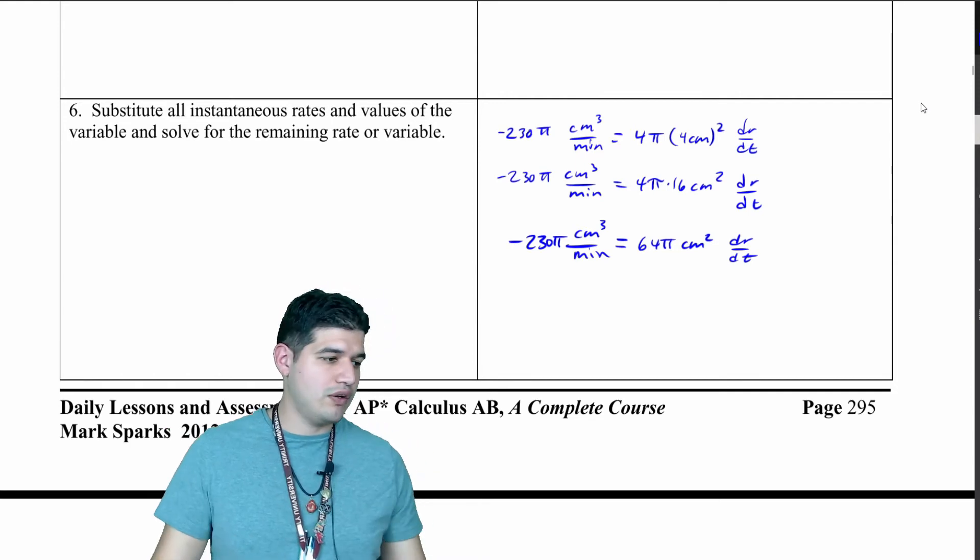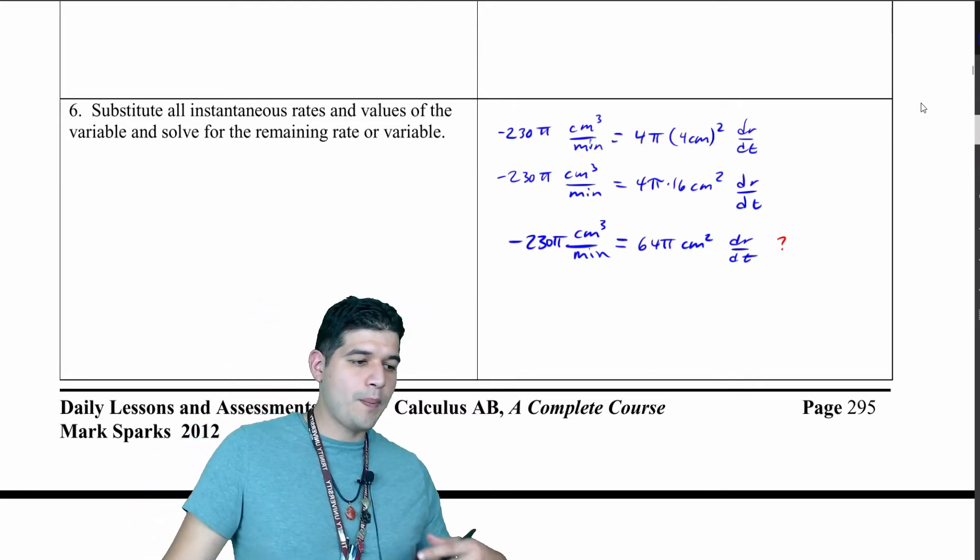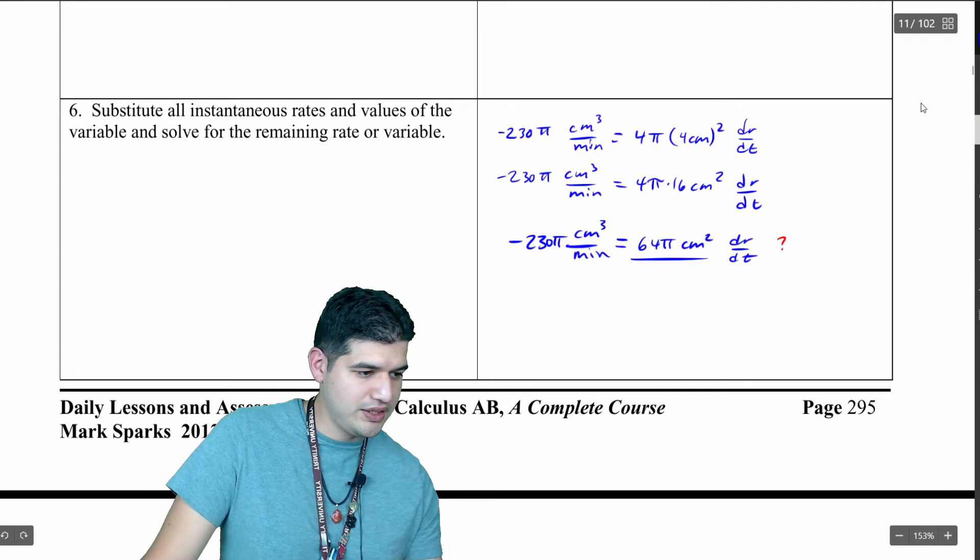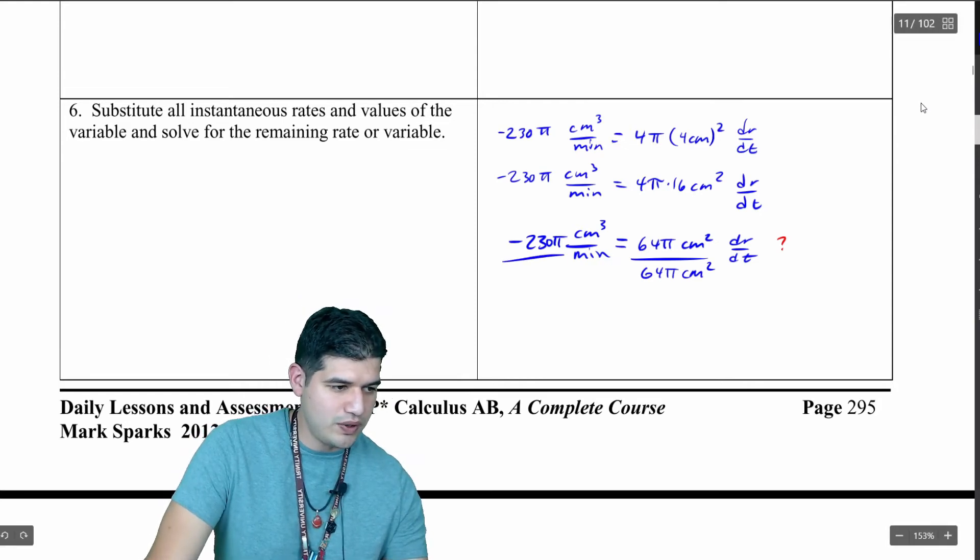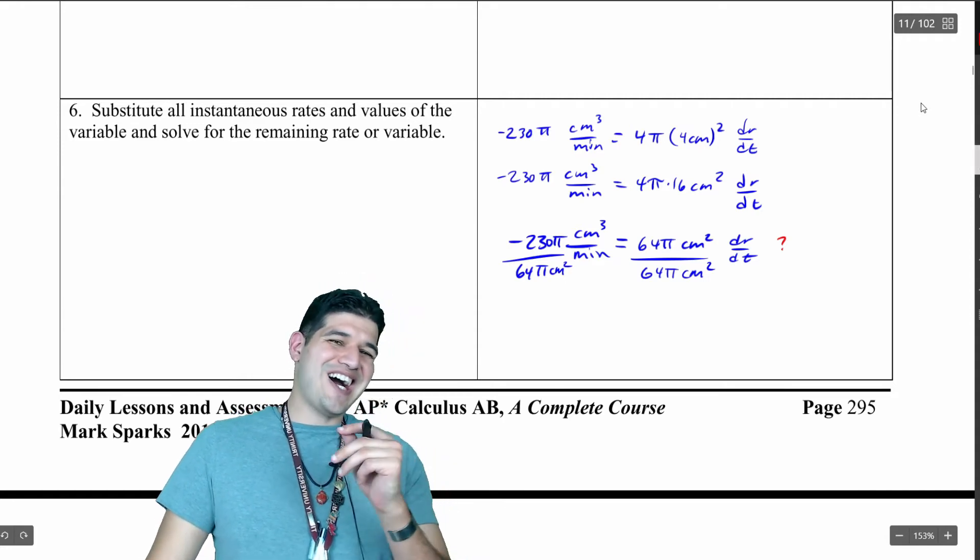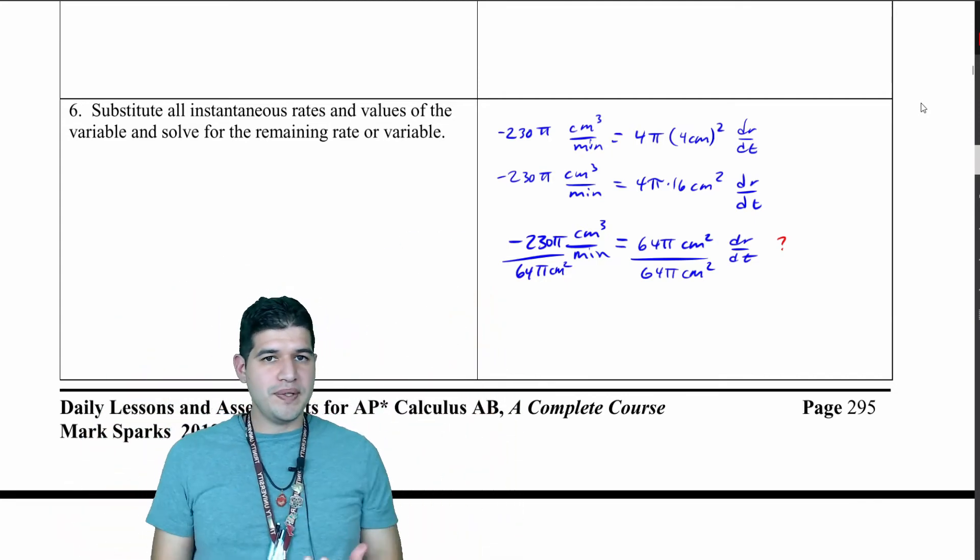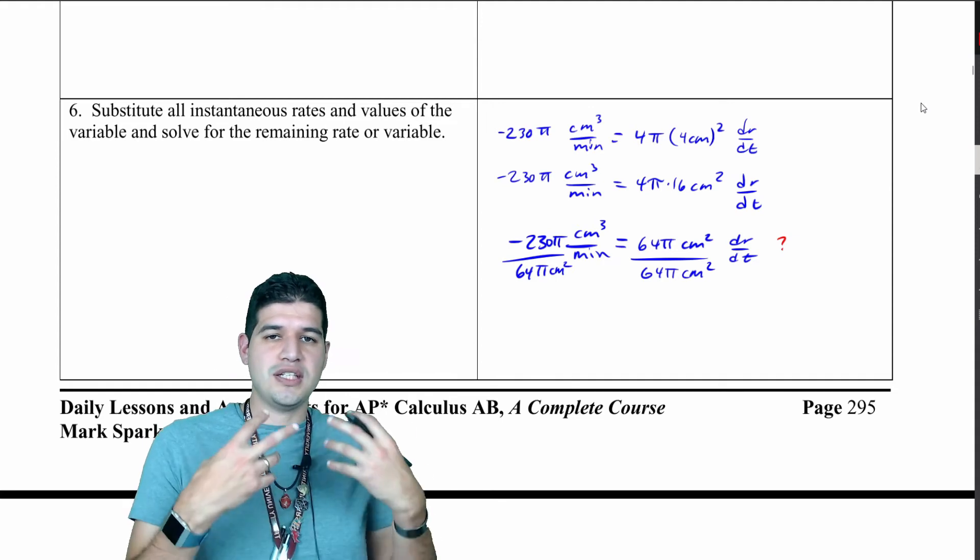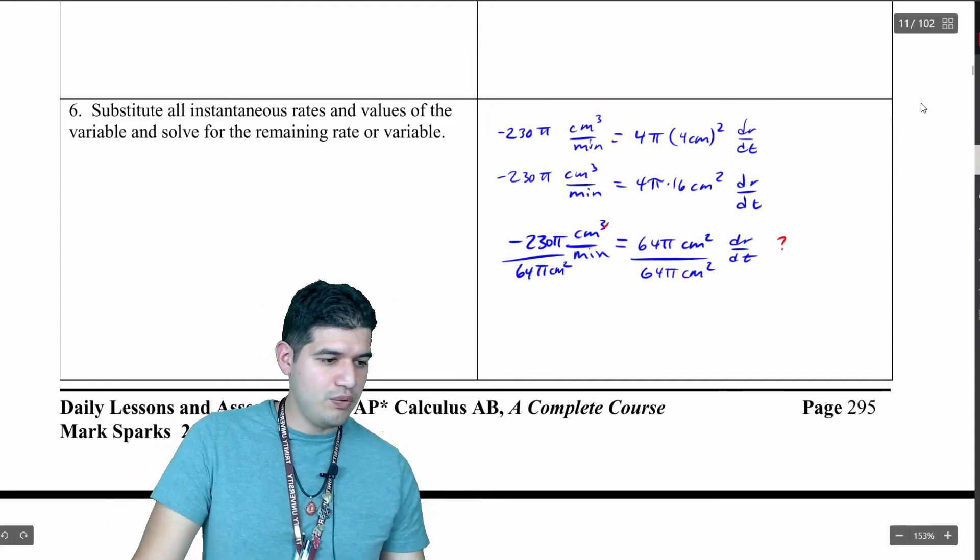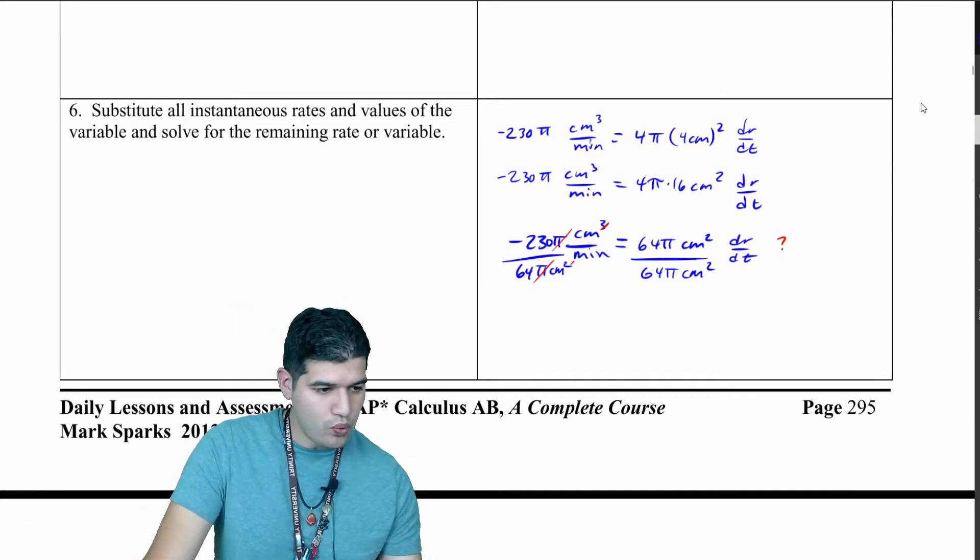Now what do I want to do? We want to figure out what is dr/dt. So I'm going to divide by 64 pi square centimeters. Notice here what I do, I'm going to divide by 64 pi square centimeters on the left side as well. This is why I keep the units, because if you notice, I've got cubic centimeters over square centimeters. Cubic centimeters over square centimeters, I'm just going to be left with just the centimeters there, and the pi's divide out as well. So if I'm going to actually put this into a calculator, we would get negative 3.594 centimeters per minute.